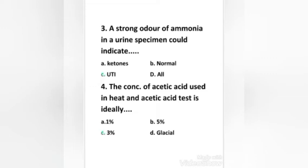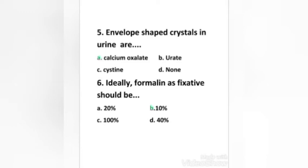The concentration of acetic acid used in the heat and acetic acid test is ideally: 1%, 5%, 3%, or glacial. Right answer is option C, 3%.